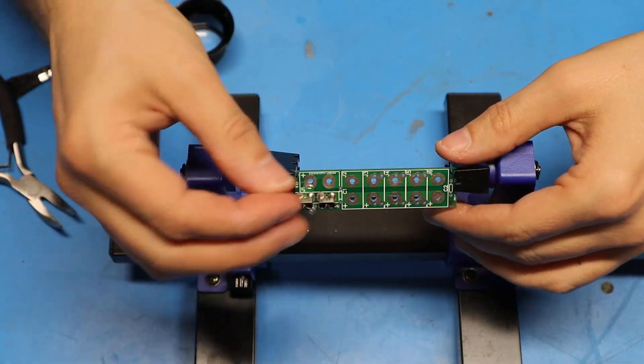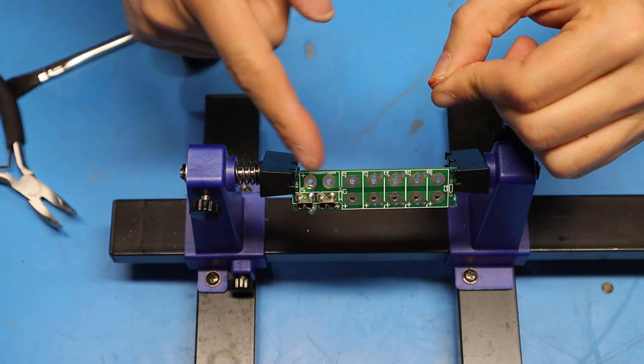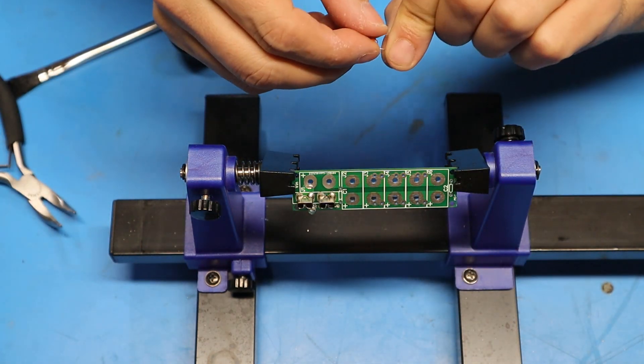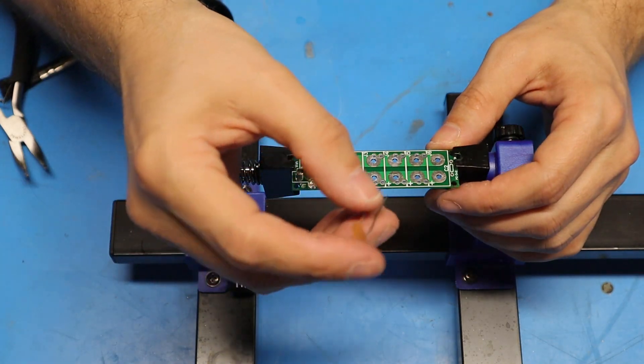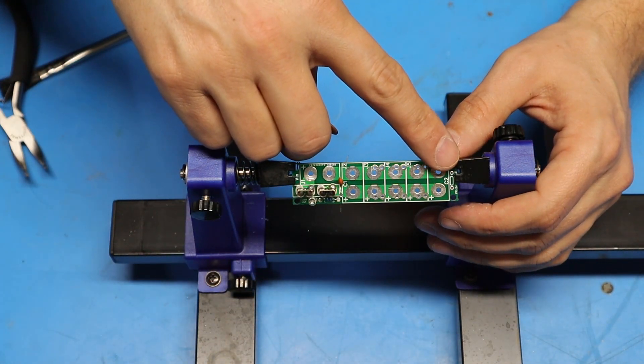Next up I'm going to install the capacitors. I'm going to install this smaller one in the C1 location that's next to the fuse terminal, and then install the larger capacitor in the C2 location at this end.